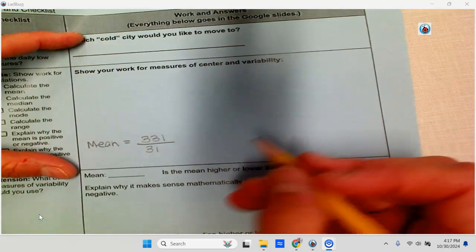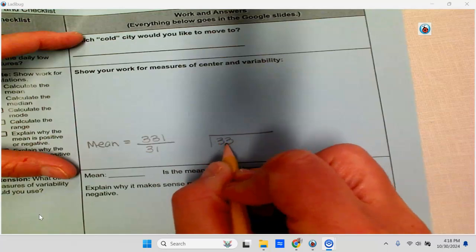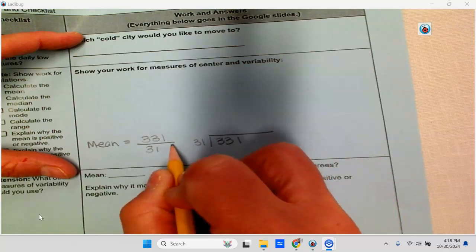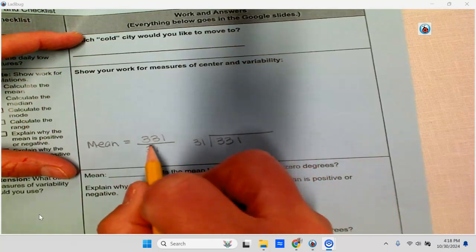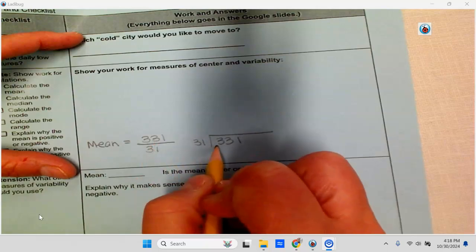Okay, so how do I divide this by 31? So we're going to study long division later, but you can use long division, but you also kind of estimate. So 331 divided by 31, I mean, think about this.